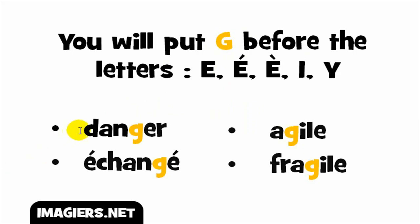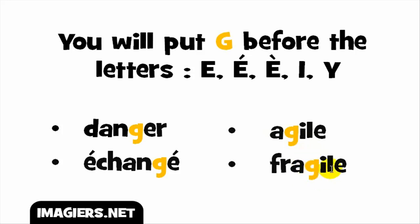Let's see some examples. G + ER gives the sound JE, as in DANGER. G + É (accent aigu) gives JE as in CHANGER. G + I also gives the J sound, as in AGILE. And here another example with GI: FRAGILE.